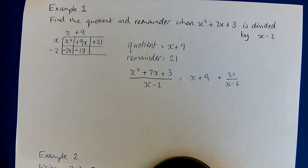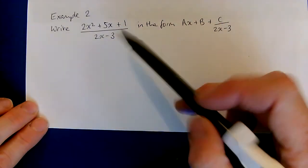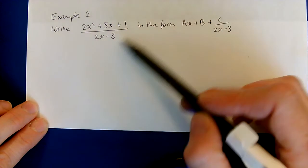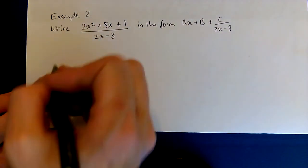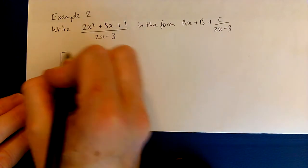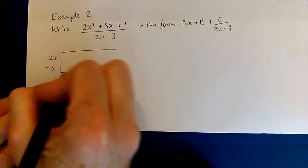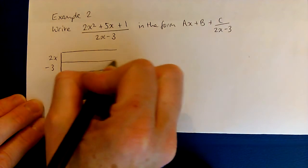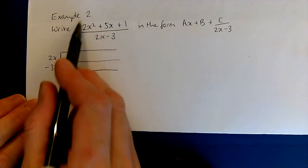The second example follows. We're going to write this algebraic fraction in this form. We simply need to carry out the division, so again we do our grid. We're dividing by 2x minus 3, so I'm going to have a line for each of those terms. I need to start with my first term here, so 2x squared.